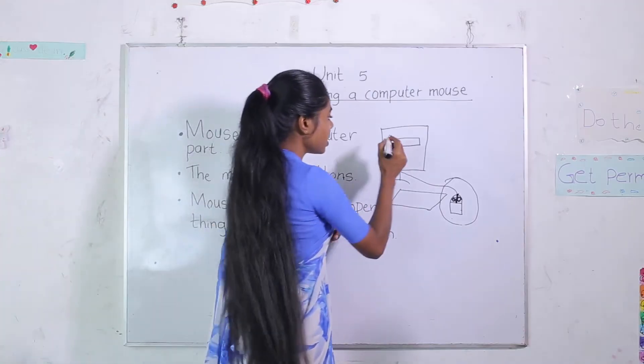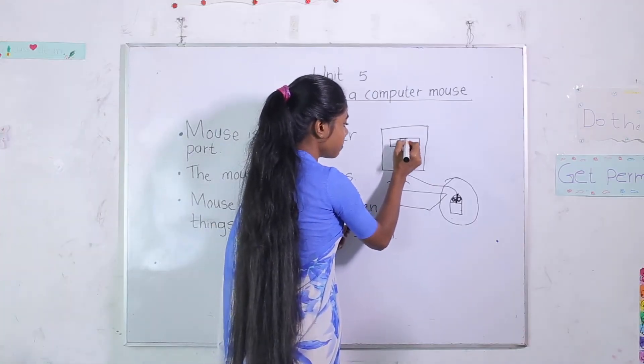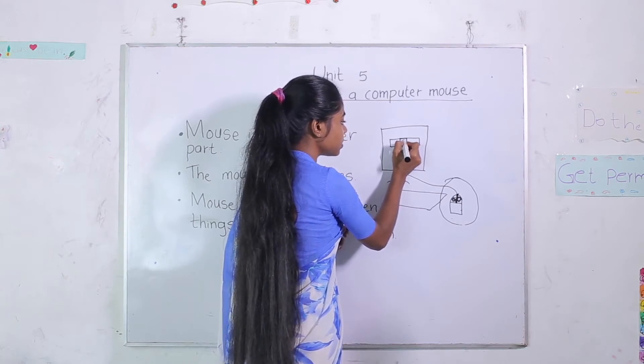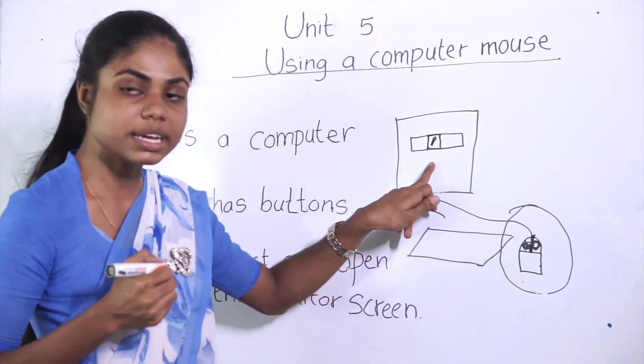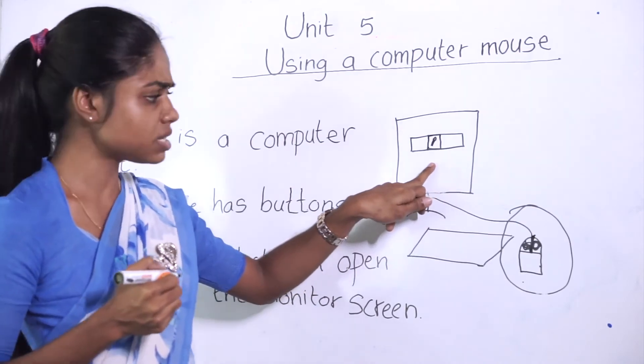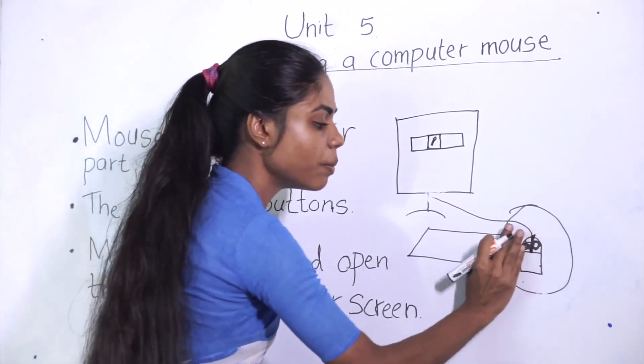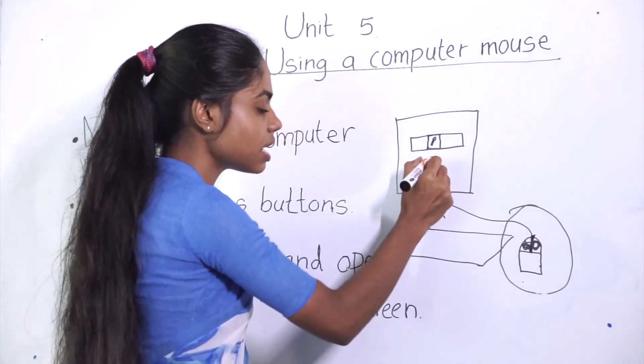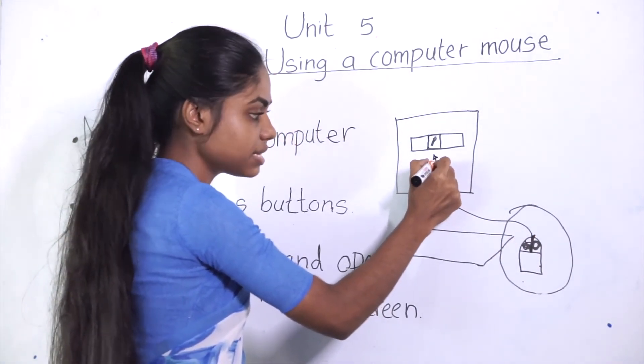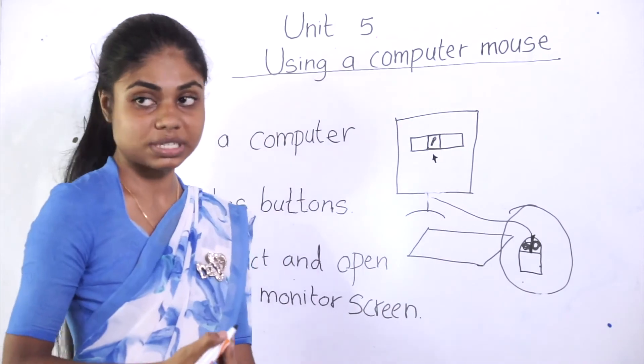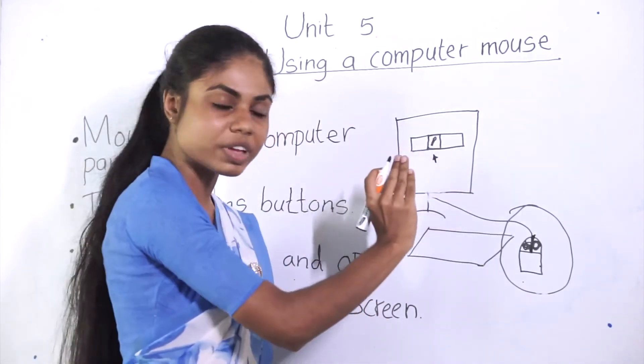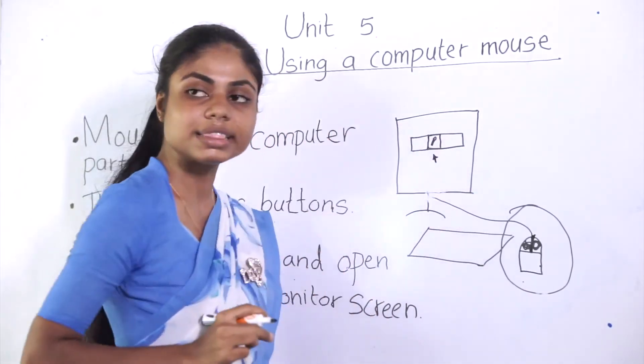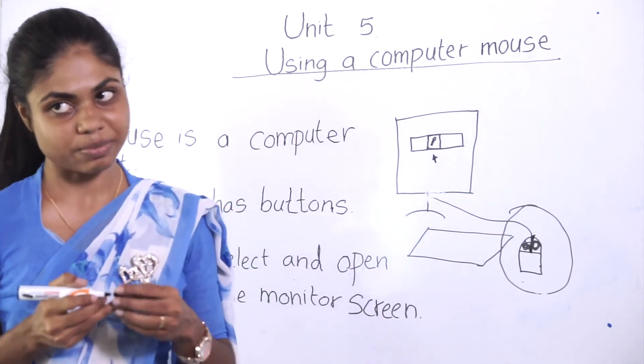And if you have a picture of something in the computer monitor and you want to select it, how do we do it? We have to move this mouse. When you move this mouse, there is an arrow in the computer monitor that also moves. And you can select the pictures in the computer monitor.